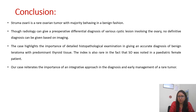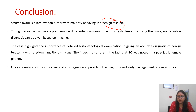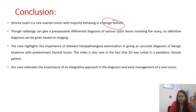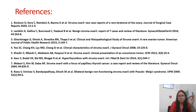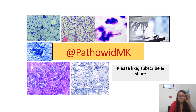To conclude, struma ovarii is a rare ovarian tumor, with the majority behaving in a benign fashion. Radiology can give an impression and help differentiate between various cystic lesions, but definitive diagnosis requires detailed gross and microscopic examination. This case highlights the importance of a combined clinical, radiological, and pathological approach. The index case also suggests that struma ovarii can be noted in very young patients, reiterating the importance of an integrative approach for early diagnosis and management of this rare entity. Thank you for your patient hearing — kindly like, subscribe, and share the channel.